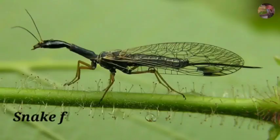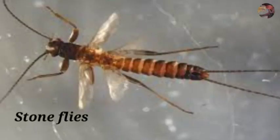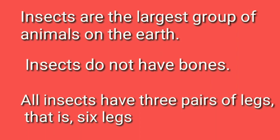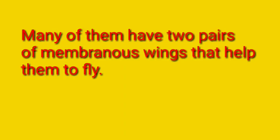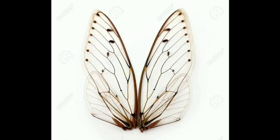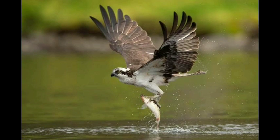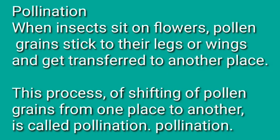So today we are going to concentrate on the useful insects only in this video because good things should come first, right? Insects do not have bones. All insects have three pairs of legs, that is six legs. Many of them have two pairs of membranous wings that help them to fly. But these are not like the usual wings that you see in birds. Here is a picture of a wing of an insect — you can see how thin they are, unlike the wings of birds which have feathers making them light and easy to fly. The wings of insects are very thin and membranous.